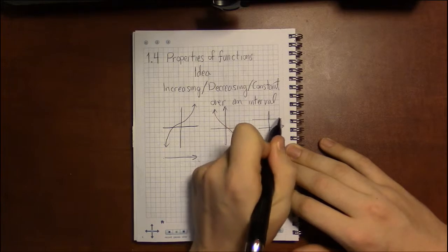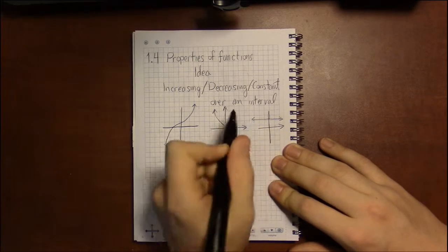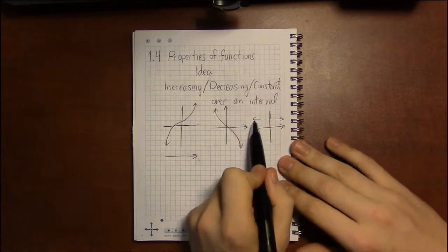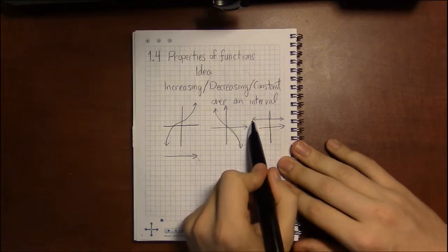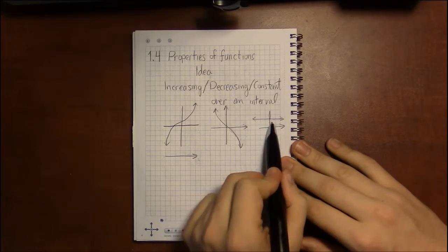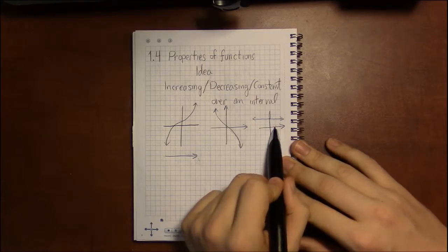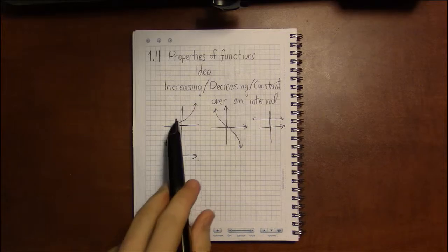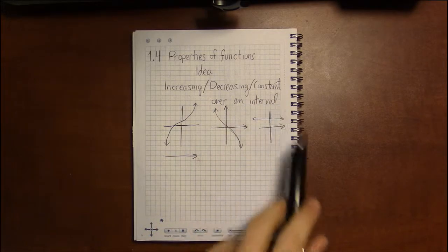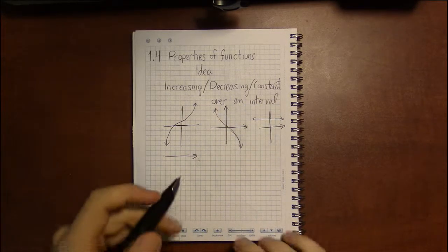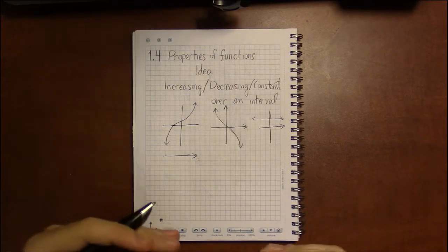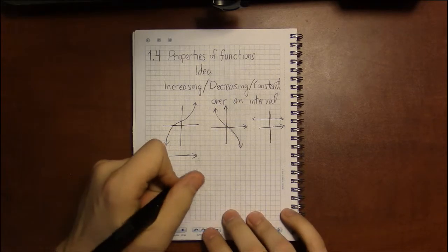And constant just simply means you're not changing. As you move left to right, you always sit at the same Y value. You never go up by anything and you never go down by any amount. This is the idea of increasing, decreasing, and constant. And of course, a function could have a mix of these properties as well.